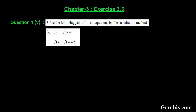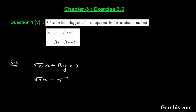Welcome friends. Let us solve the fifth part of question number one of exercise 3.3 of chapter 3. The question says: solve the following pair of linear equations by the substitution method. The given equations are: root 2·x plus root 3·y equals 0 (equation one), and root 3·x minus root 8·y equals 0 (equation two).